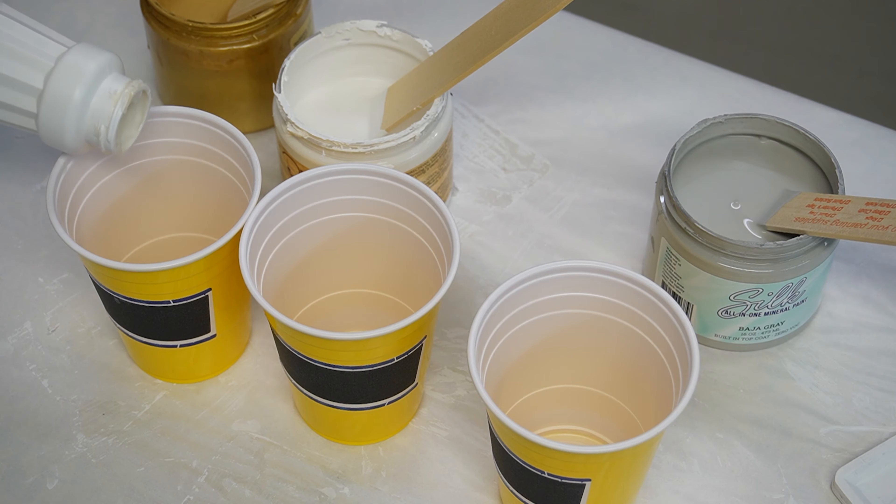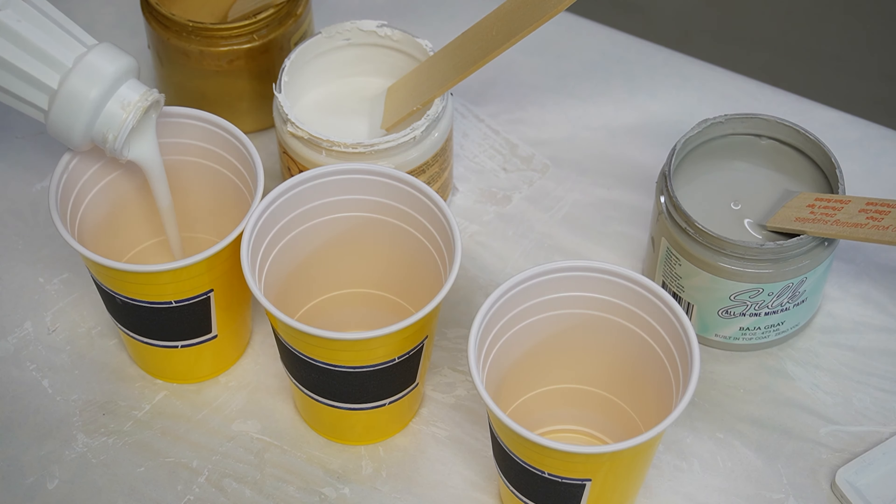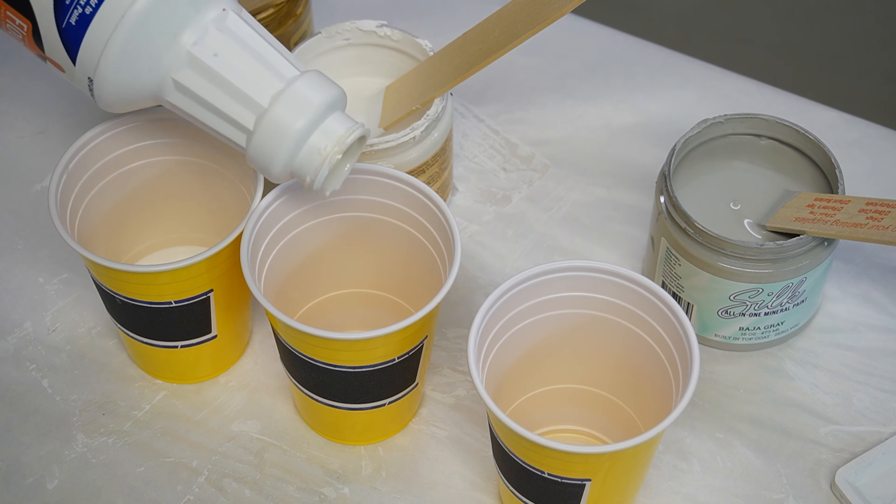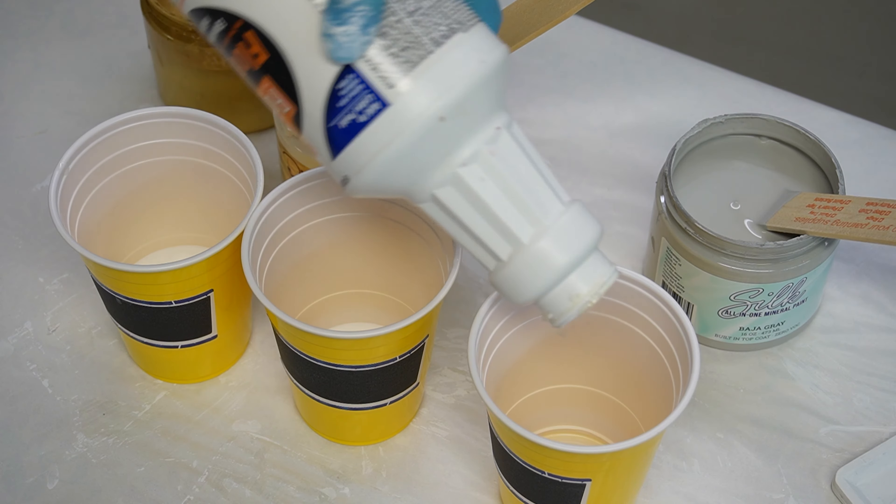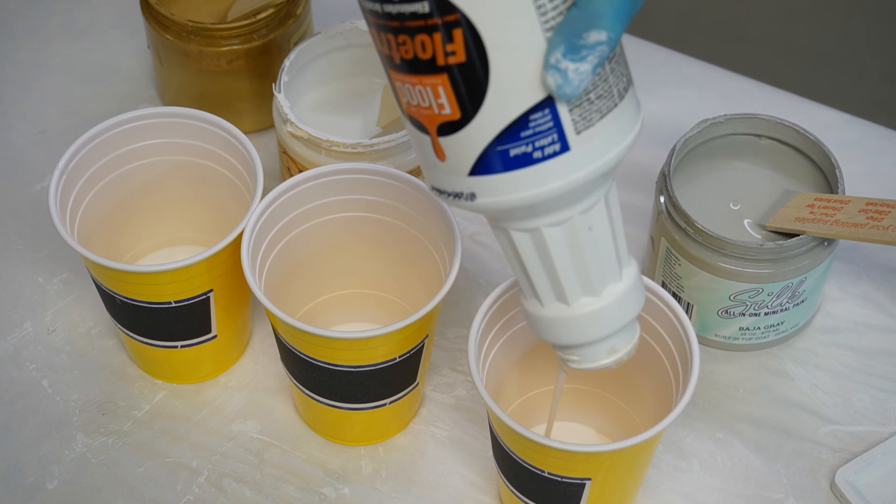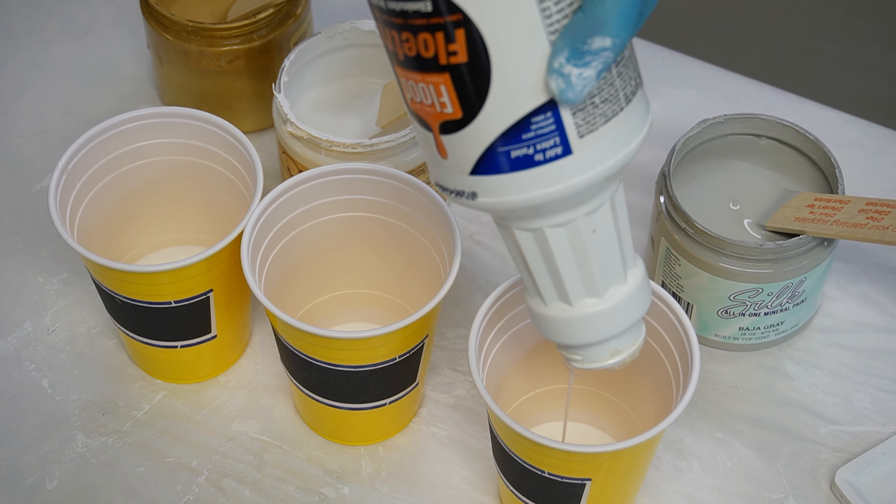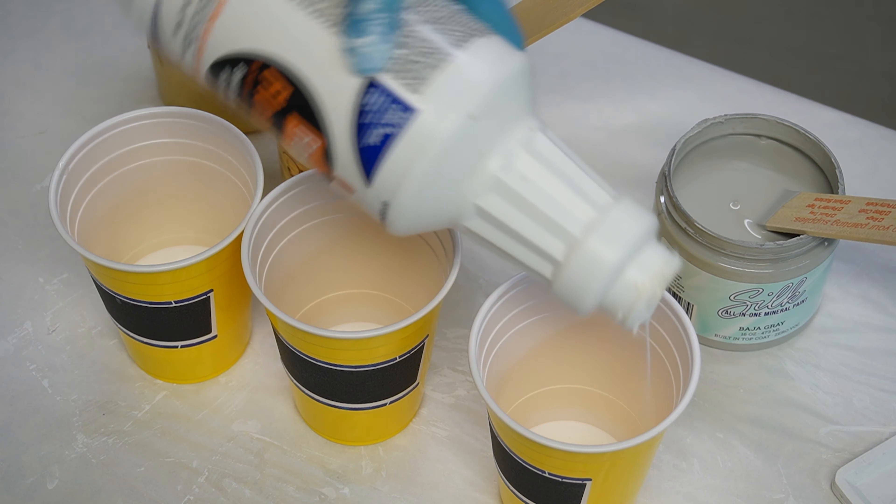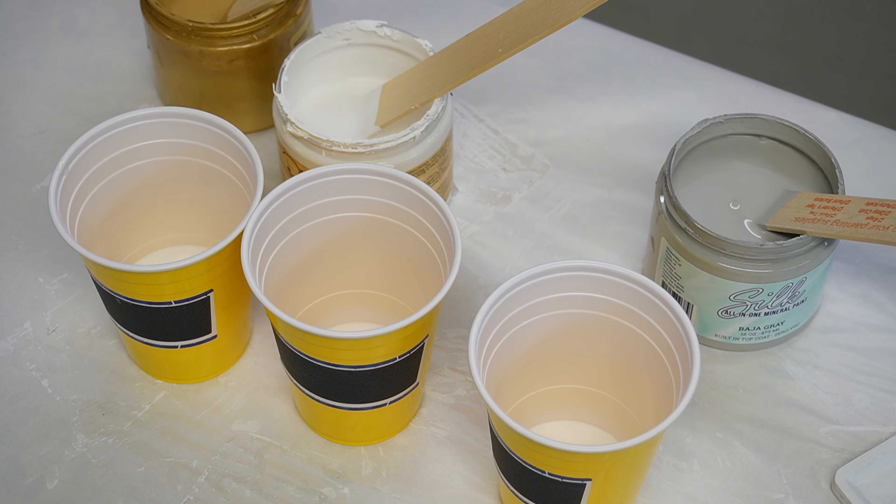Now for mixing the paints. To get a really nice flow, I like mixing a 50-50 mix of paint to Floetrol. And I do this in separate cups. At first, you want to keep all your paint colors totally separate. Floetrol is an amazing pouring medium and it's very cost effective.